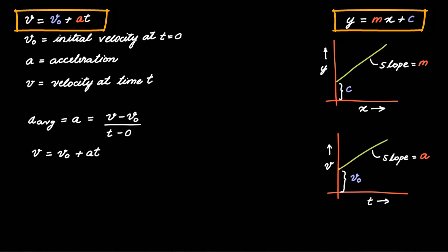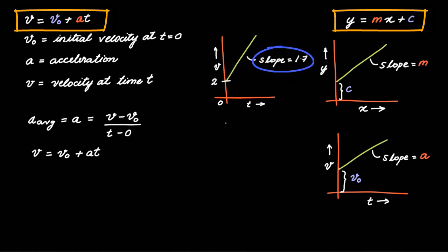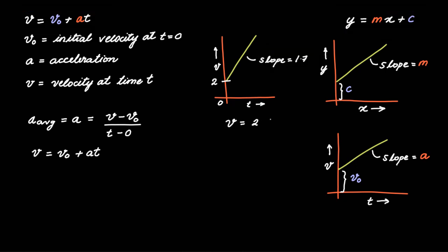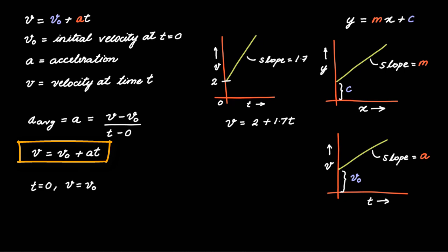As an example, if you have a graph like this, you can immediately say that the initial velocity is 2 meters per second and acceleration a is 1.7 meters per second squared. Therefore, the equation of motion can be written as v = 2 + 1.7t. You can check this by putting t = 0 to find v = v₀, which is true, and by taking the derivative dv/dt = a, which is also true.